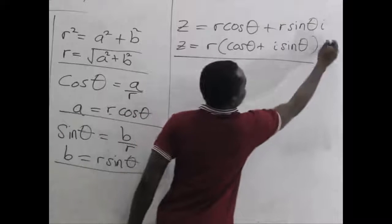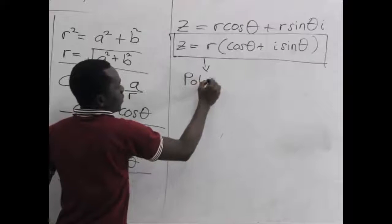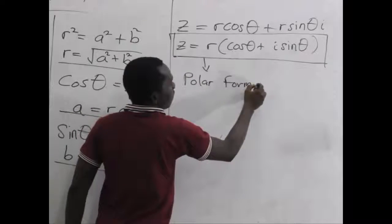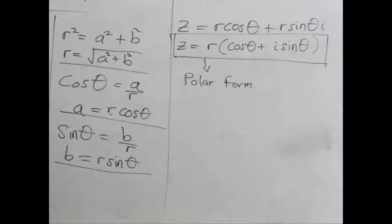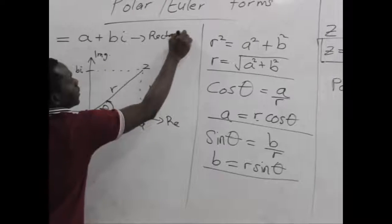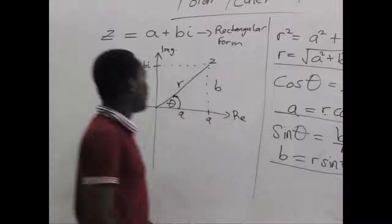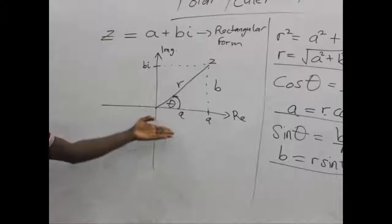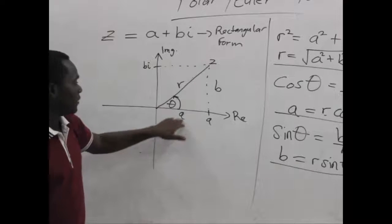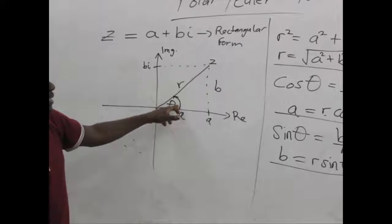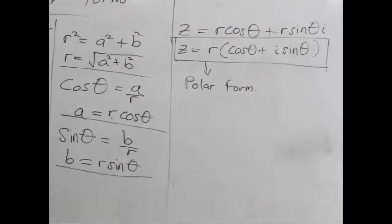So this new equation that we derive is what we call the polar form of the complex number Z. We have this as the rectangular form and we've converted it into the polar form. We first represent the complex number on the complex plane, we find the expression for R, which is the length of the complex number, we find the expression for A, B with respect to R and theta, as we have here. And we substitute A and B back into the rectangular equation. We get the polar form.